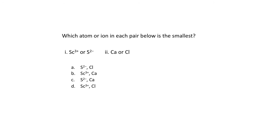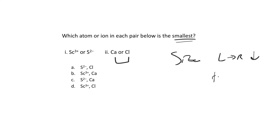This question is asking which of each pair is the smallest. When we're thinking of size of atoms or ions, for uncharged atoms we use our left-to-right trends. For calcium versus chlorine, the left-to-right trend is that size when uncharged decreases left to right, and then top to bottom increases.